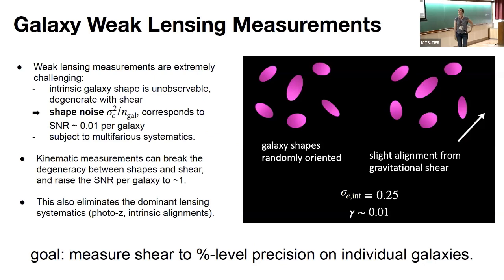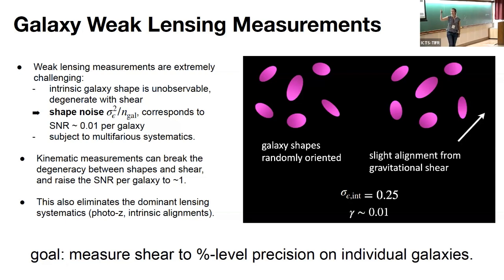The idea is to develop a different way to measure weak lensing, which is typically a very complicated statistical measurement. In principle we want to measure the slight alignment of galaxy shapes due to weak lensing. That's traditionally a very small signal — the shape dispersion of galaxies, σ_ε, is of order 0.25 — and we are trying to measure a percent-level shape distortion.